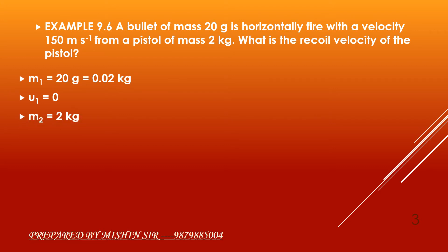Initial velocity of the pistol, as it was at rest, so it will again be 0, that is U2 equal to 0. Now, final velocity of bullet, that is V1, will be equal to 150 meter per second. As we need to find recoil velocity of the pistol, that is V2, we need to find it, so V2 will be equal to question mark.